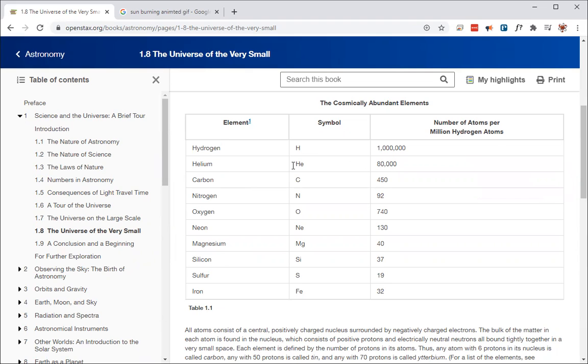And you see the second most abundant is helium, carbon, and then all the way down to iron, rounding out the top 10.